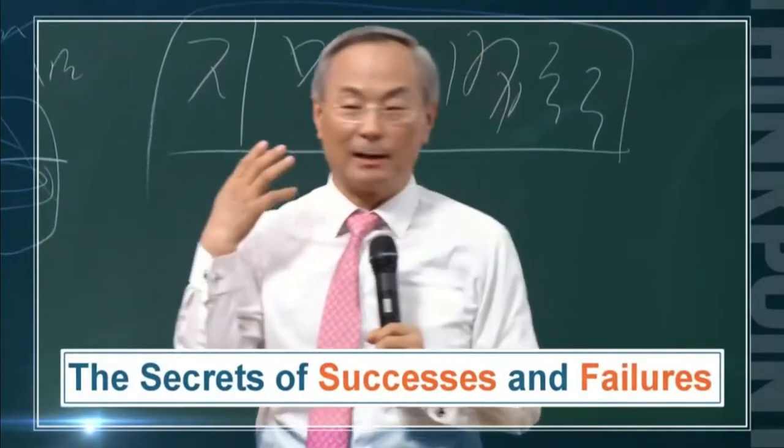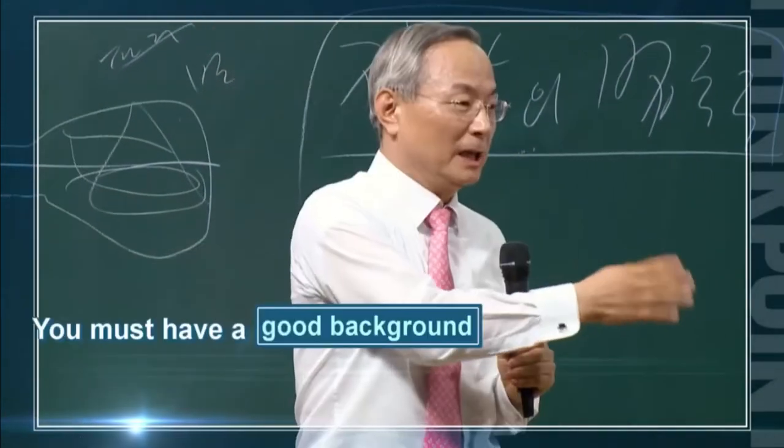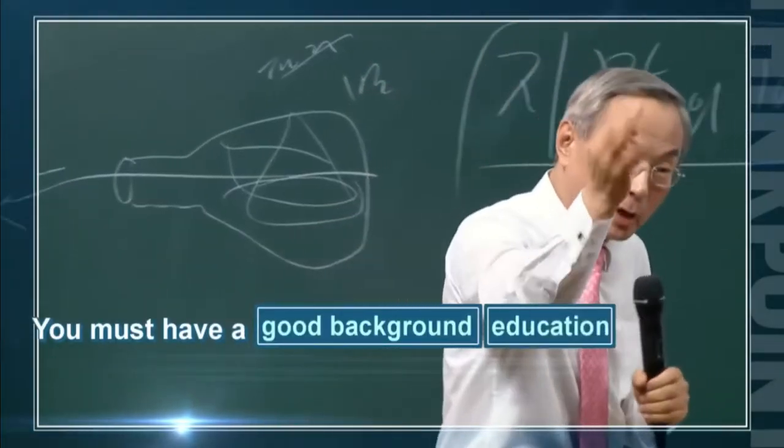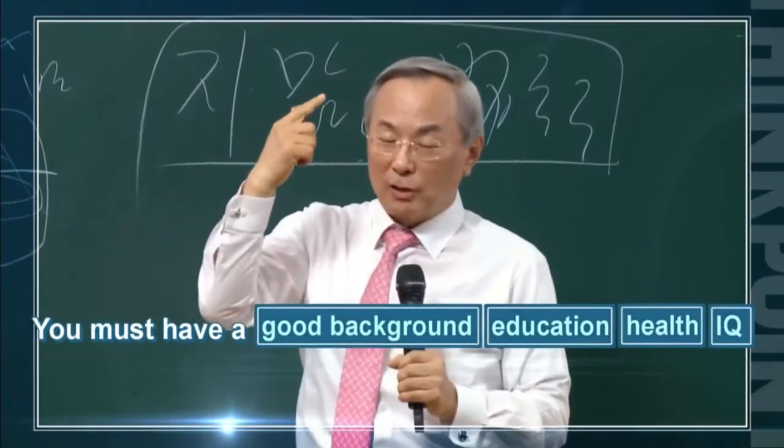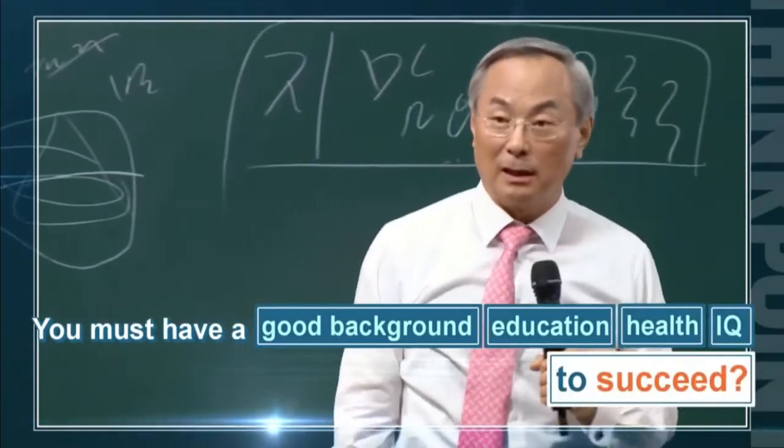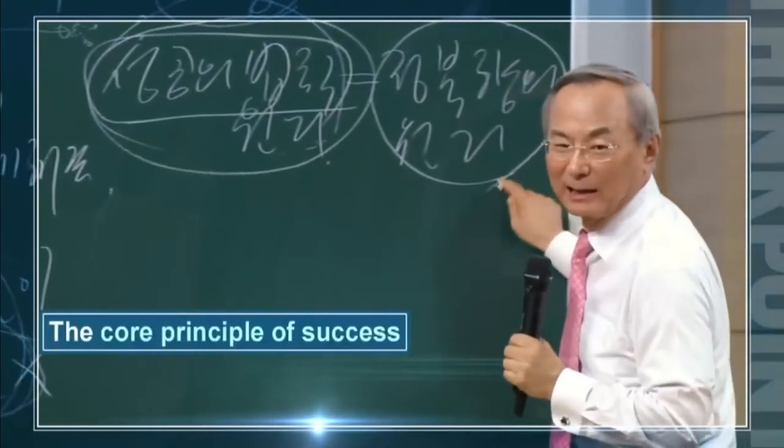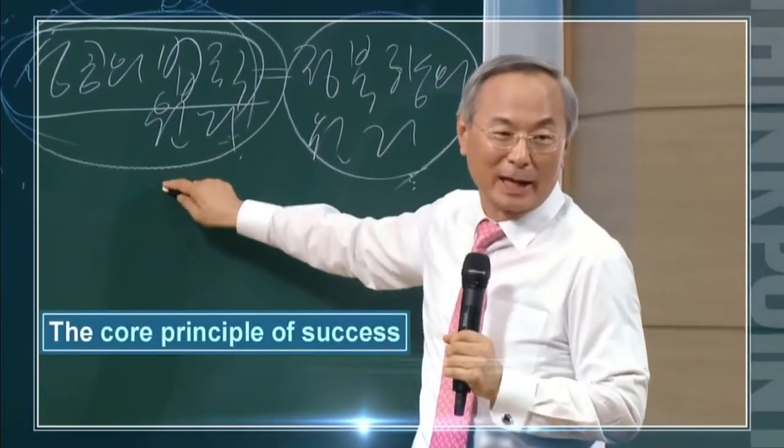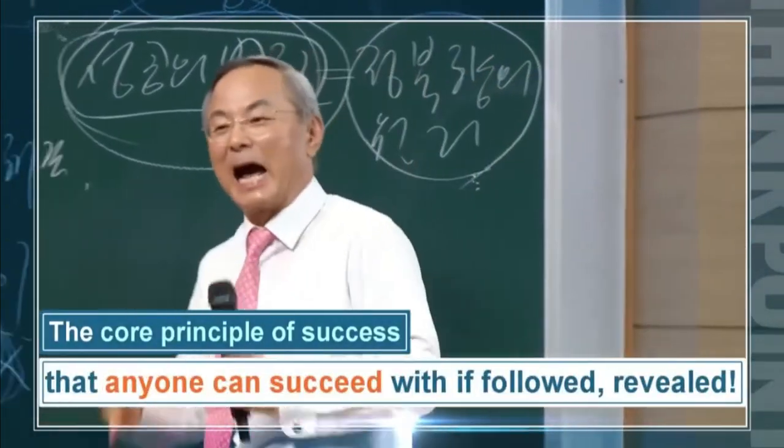Some people become rich, and some become failures. Must you be born rich, educated, healthy, and have a very high IQ just to succeed? Because the law of success is already set, if you follow the law, you will succeed.